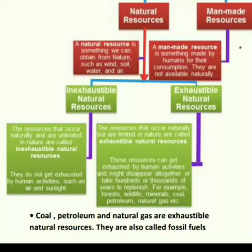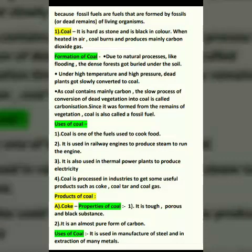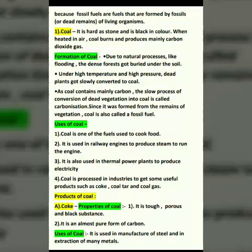Coal, petroleum, and natural gas are exhaustible natural resources, also called fossil fuels. They are formed from the dead remains of living organisms. Coal is hard as a stone and black in color. When heated in air, coal burns and produces mainly carbon dioxide gas.